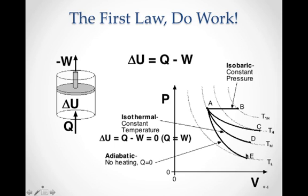In the last process, going from A to E, this is called an adiabatic process — it means there's no heating, so Q equals zero. In this case, the volume increases, doing work, but since Q equals zero, the internal energy decreases. Therefore the temperature drops, going from one isotherm to another. The temperature drops to compensate for the increase in volume. Since the work is negative — doing work to the outside world — the internal energy decreases and the temperature decreases.